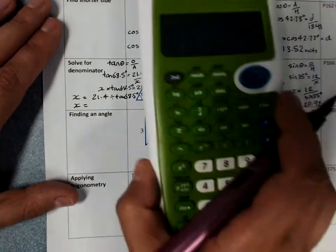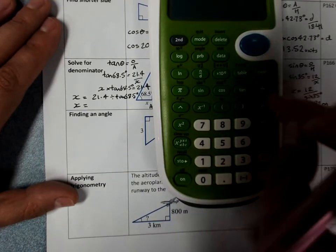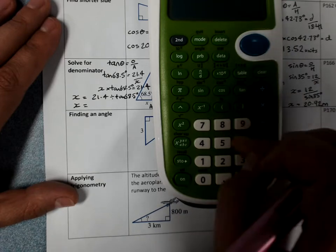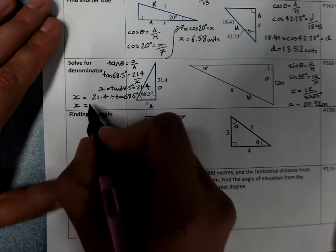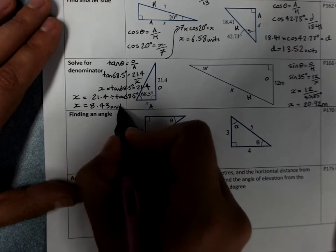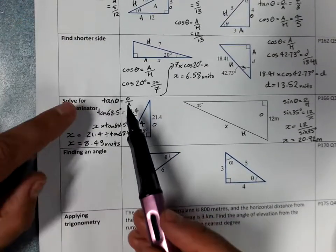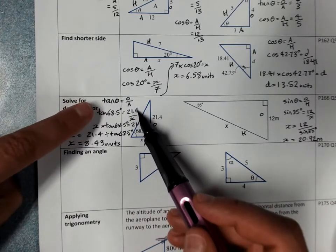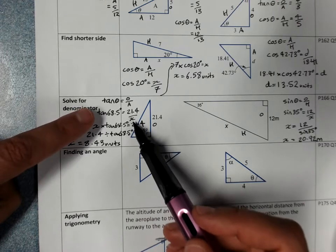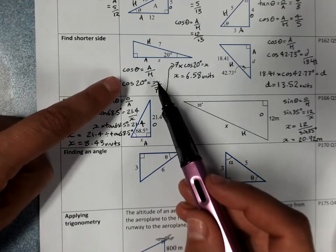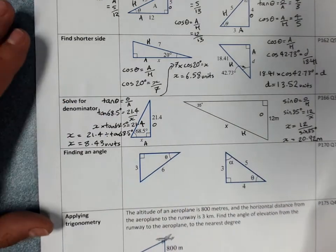Sorry about squeezing my working in there. 21.4 divided by tan 68.5, 8.43. Now, you can just remember, if you do proper working, if you write your ratio and substitute your values, when you see that x on the bottom, you know it's going to be divide. When you see the x on the top, you know it's going to be times. Showing correct working really supports you to get the right answer.